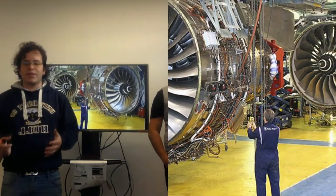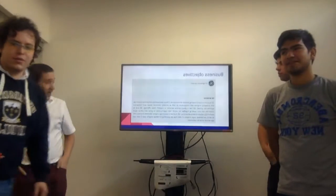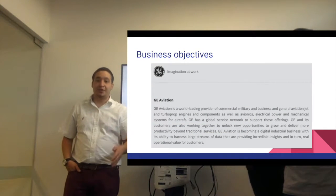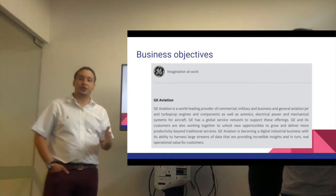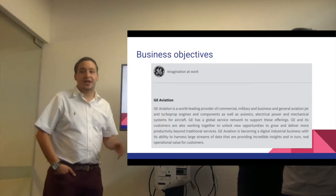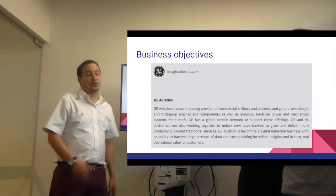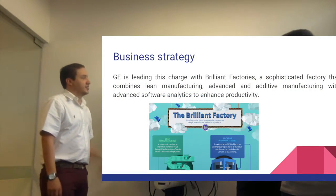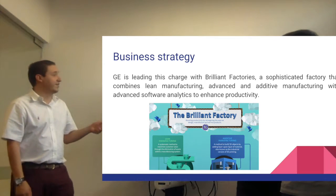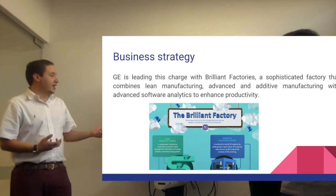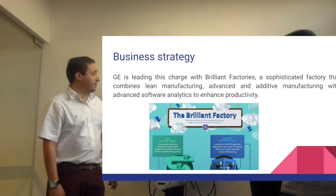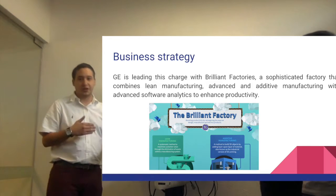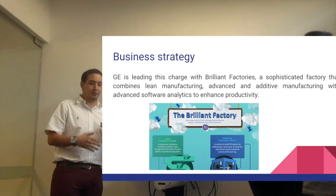Now we're going to speak about the internal environment of General Electric — specifically the business objectives and strategy. The main objective of GE is to remain a leader across its many businesses, including aviation, and also to reduce lead time because it is very expensive to make delivery mistakes with suppliers. Their business strategy is based on the concept called Brilliant Factories, which has two main pillars: additive manufacturing and lean manufacturing — having new systems to control and analyze all processes and make every single part more efficient.